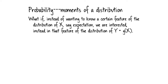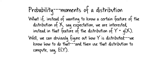One surefire way: we can figure out how Y is distributed. If we know how X is distributed and Y is a function of X, we use our knowledge of functions of random variables to figure that out, and then compute the expectation of that new distribution. No problem.